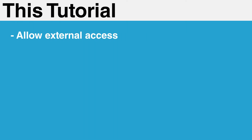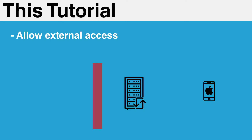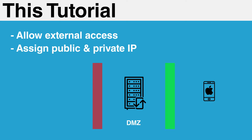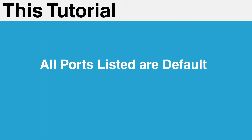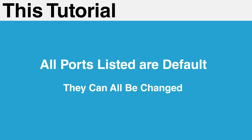To do this, we recommend moving MobileTogether server inside your network's DMZ. We will also expect the server to be given a public-facing IP address in addition to a private internal address. Please note that all of the ports listed in this guide are default ports — every one of them can be changed to suit the needs of your network configuration.